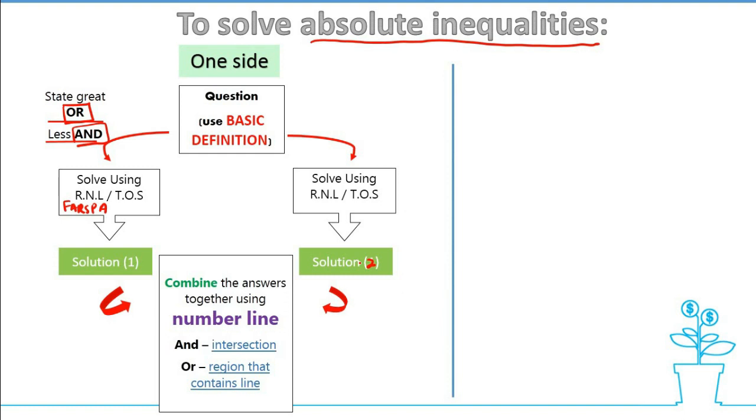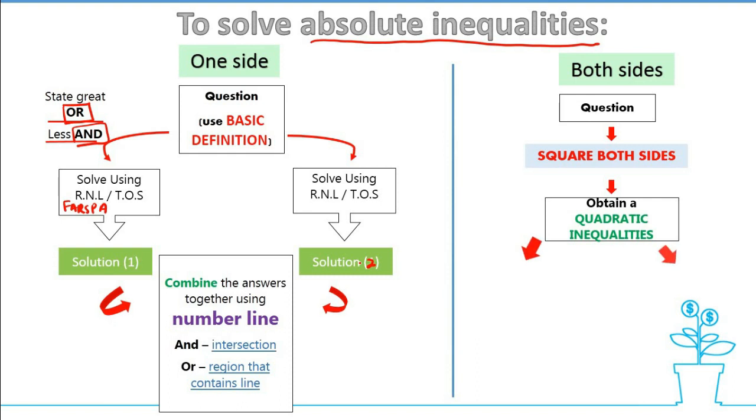What will happen if you have both sides with the modular sign, which are the absolute? From the question we need to square both sides. From the squaring both sides we could have a quadratic inequalities. As what we learned before, quadratic inequalities can be solved using graphical or real number line as well as table of signs.